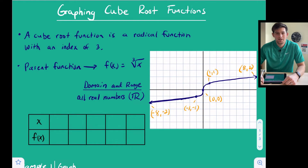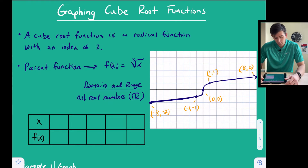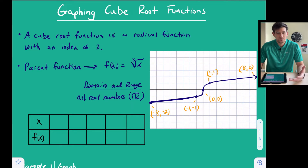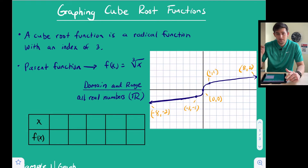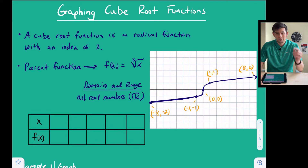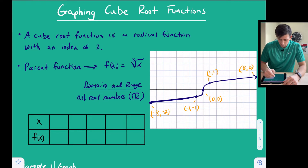Hello everybody. In this video we're going to talk about how to graph cube root functions. A cube root function is a radical function with an index of three. The radical symbol is sometimes associated only with square root, but square root is when we have an index of two. In this video we're talking about graphing cube root functions, so our index is three.